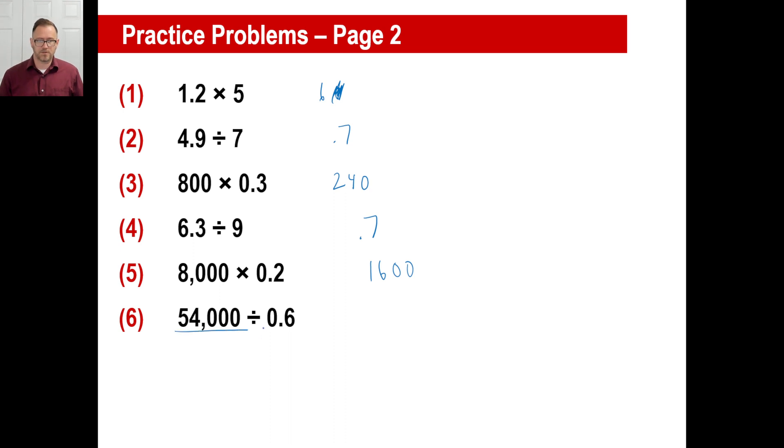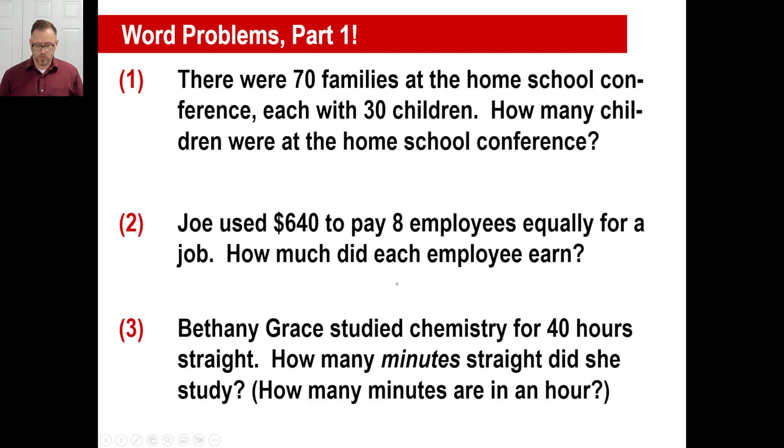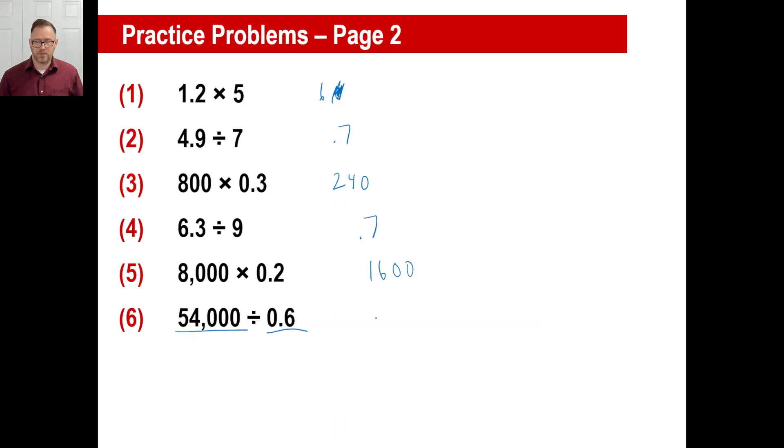This is about 50,000 divided by about one, which is about 50,000. Ignoring decimals and zeros, 54 divided by six is nine. The actual answer here is 90,000. That's the trickiest one we have here. But we'll do more of those as the year goes on.